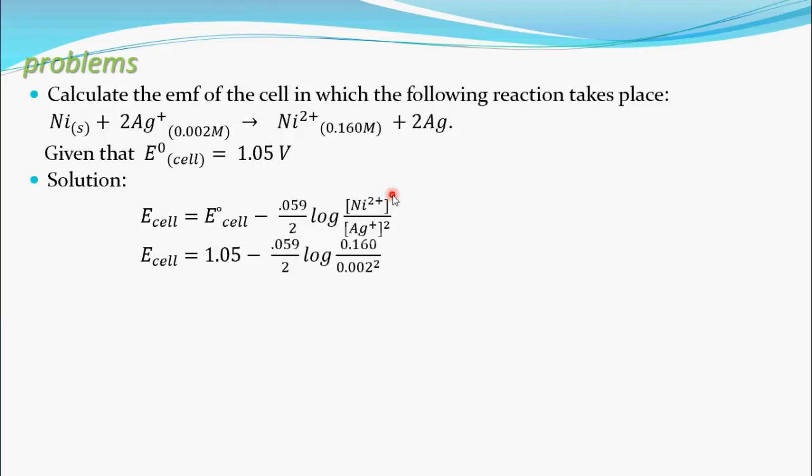So substitute the values. E cell equal to—he given E⁰ cell as 1.05—minus 0.059 by 2 into log of—he given this concentration of nickel as 0.160, nickel ion concentration as 0.160 molar, and divided by—he given Ag⁺ concentration as 0.002, to the power 2.